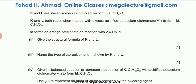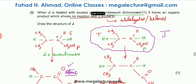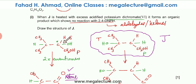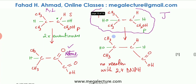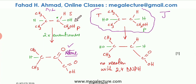K and L are stereoisomers with molecular formula C5H12O2. K and L are mirror images of each other because there is a chiral center in the carbon atom. Both K and L react with excess acidified potassium dichromate(VI) to form compound M — the oxidation product containing a ketone and a carboxylic acid.